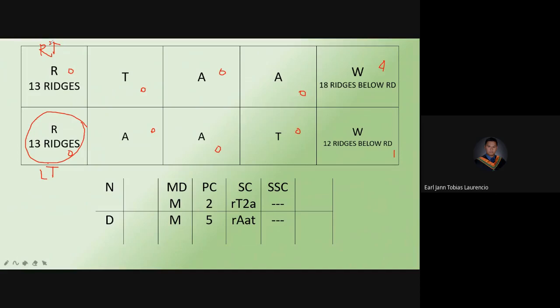The left thumb has a ridge count of 13. Small is 1 to 11, medium is 12 to 16, large is 17 or more. Since 13 falls within 12 to 16, the left thumb is medium. So we write the letter M for the left thumb in the denominator.